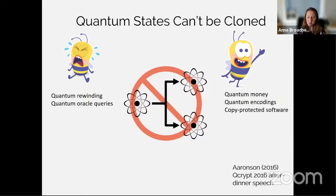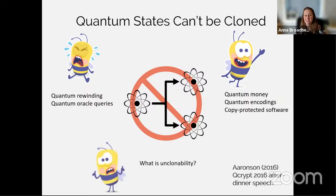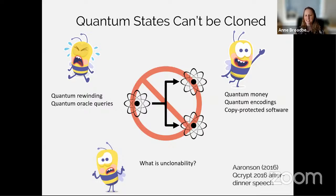I refer you to Scott Aaronson's 2016 QCrypt after-dinner speech, where the main topic was really unclonability — the no-cloning theorem and what we can do with it. There are fundamental questions that remain. As far as I know, we don't really have an answer to the question of what unclonability is. It's one of those things where you say 'I know it when I see it,' but there's no formal definition of precisely what it is.